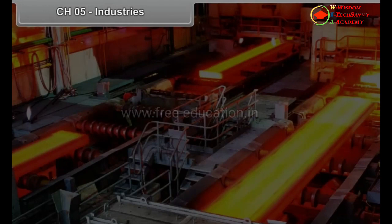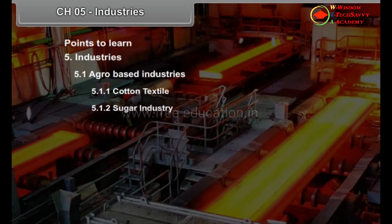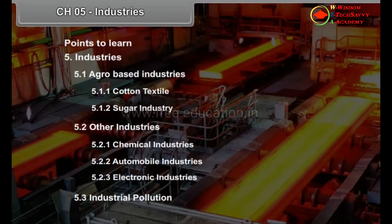Chapter 5: Industries. Points to learn: 5.1 Agro-based industries — 5.1.1 Cotton textile, 5.1.2 Sugar industry. 5.2 Other industries — 5.2.1 Chemical industries, 5.2.2 Automobile industries, 5.2.3 Electronic industries. 5.3 Industrial pollution.